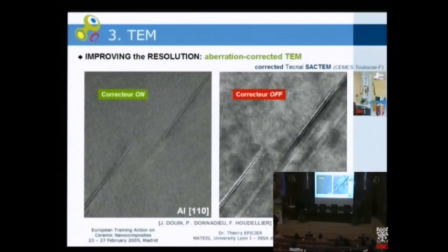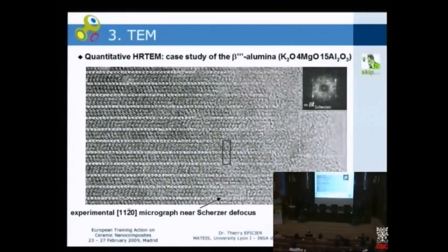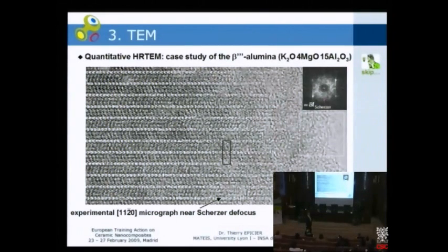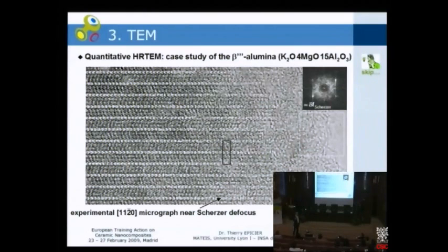We are now able to do high-resolution imaging at atomic resolution and produce very nice images, but we want to do measurements — to judge objectively that our model is correct, to convince supervisors and referees. We can use error factors or image agreement factors based on cross-correlation calculations.